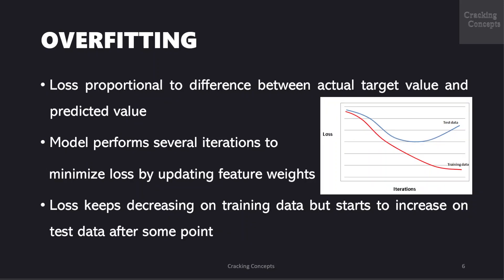Now the loss that happens here is proportional to the difference between the actual target value and the predicted value. A supervised learning model performs several iterations to minimize this loss by updating the feature weights. However after some point model behaves differently on test and training data. Loss just keeps decreasing on training data but starts to increase on test data after some point. So it is crucial to detect this point to create an outstanding machine learning model.